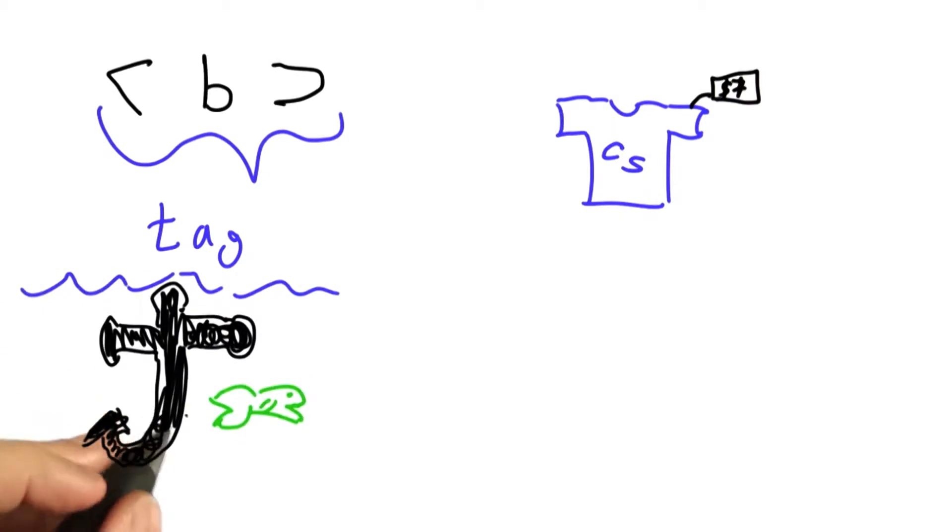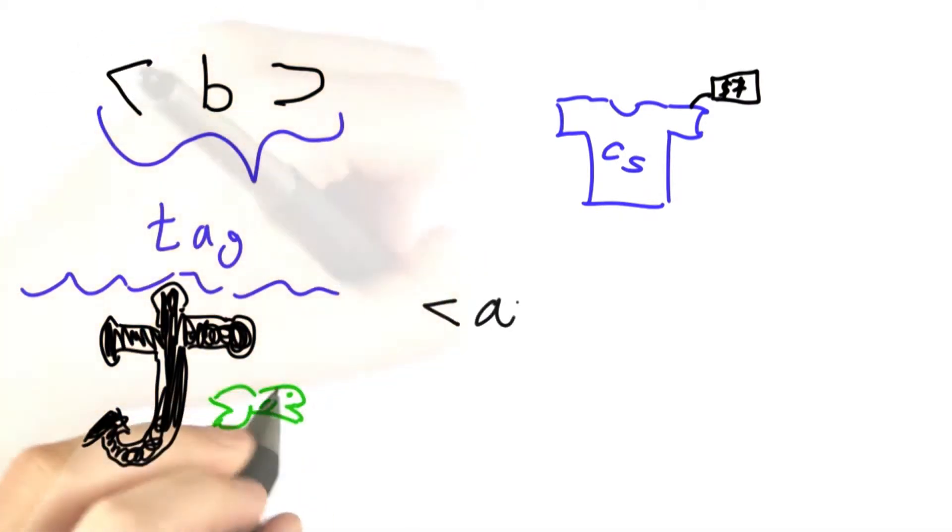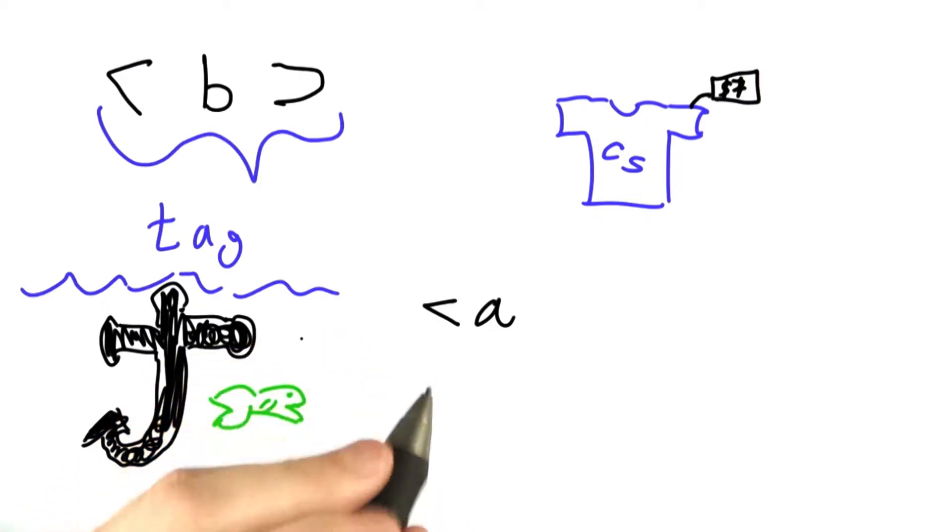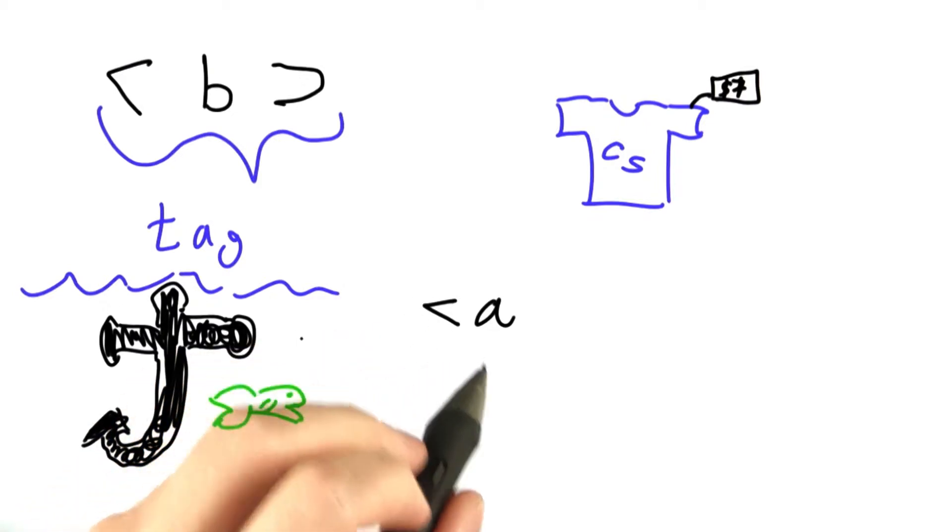Another super common kind of tag is the anchor tag, which is used to add hyperlinks to web pages. In some sense, this is the defining characteristic of what it means to be a web page.